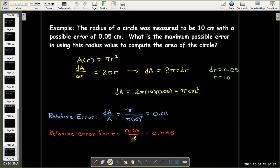So, because we're squaring the r, that's why our relative error actually gets doubled. And that kind of makes sense. All right, I hope you've enjoyed this short video on linear approximation.